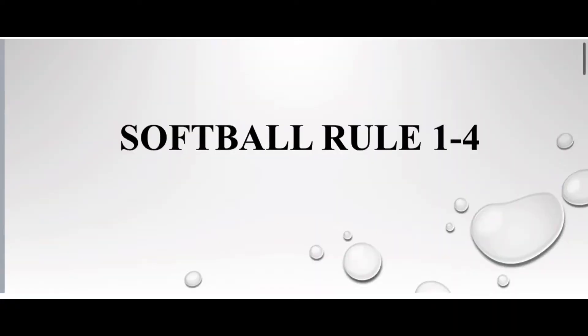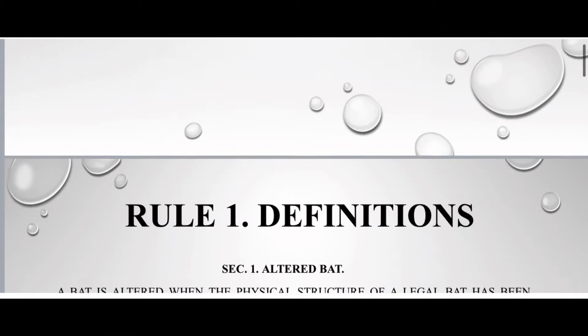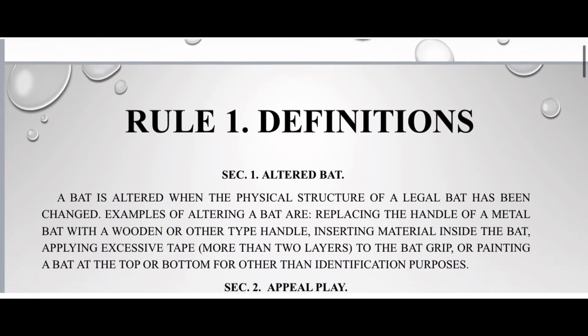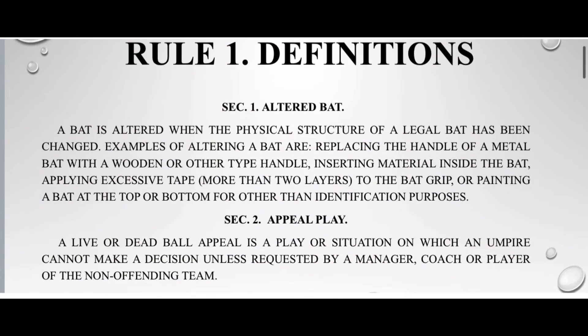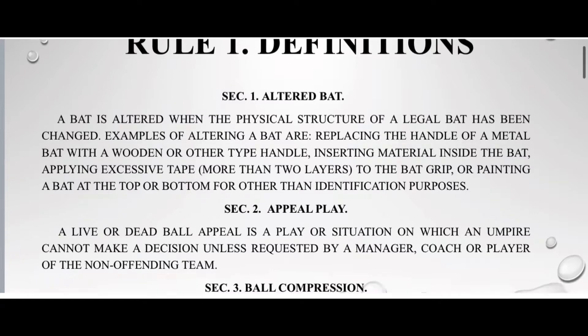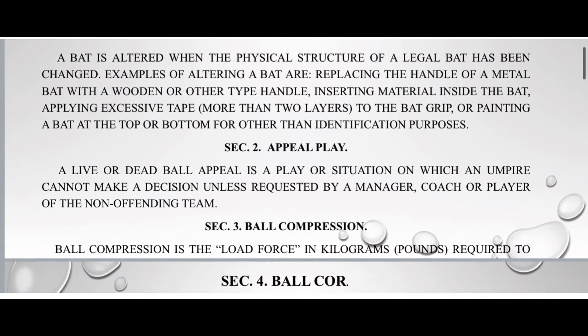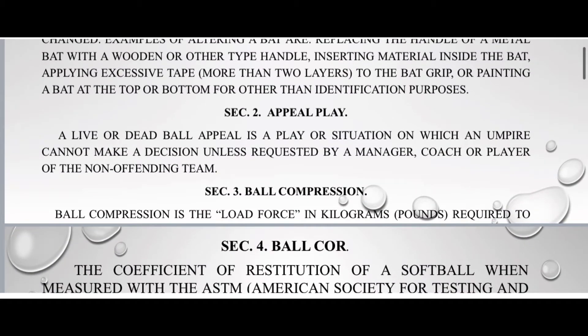Softball Rule 1 to 4. Rule 1: Definitions. Section 1: Altered Bat. A bat is altered when the physical structure of a legal bat has been changed. Examples of altering a bat are replacing the handle of a metal bat with a wooden or other handle type handle.